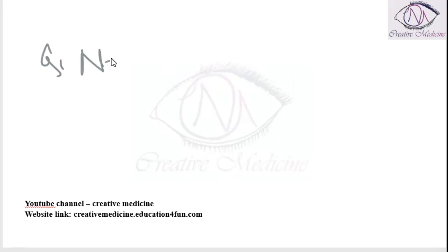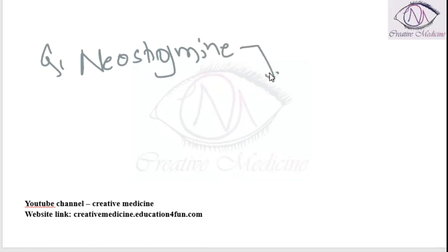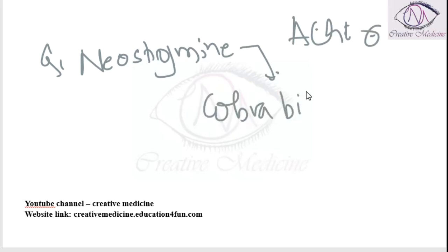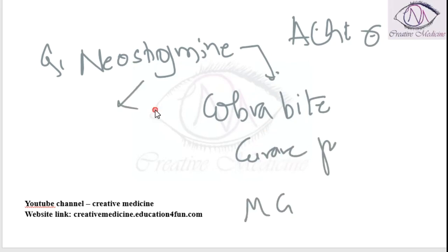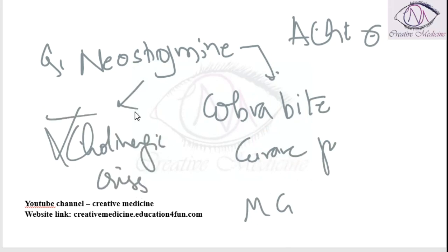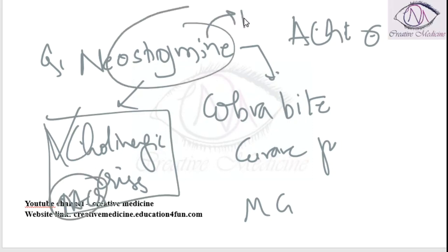Neostigmine is not used in which condition? Neostigmine is an acetylcholinesterase inhibitor, so it is used in cobra bite along with atropine, in curare poisoning, and in myasthenia gravis. Neostigmine is not used in cholinergic crisis because cholinergic crisis occurs due to increased acetylcholine — if you give neostigmine, it further increases acetylcholine and precipitates the cholinergic crisis.